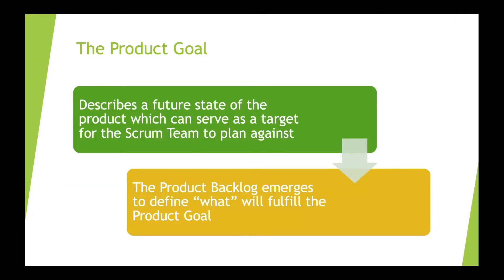The product goal provides context to the product backlog, describes a future state of the product, and serves as a long-term target for the Scrum team to plan against. There is only one product goal for the product backlog at any one time. The Scrum guide is intentionally general about the product goal, allowing Scrum teams to structure the goal in a way that most effectively works for their team. For example, one team might work best with product goals that are very specific and align with quarterly objectives, while another might work best with higher-level product goals. The product goal is added to the product backlog, then the remaining product backlog items emerge to fulfill it.